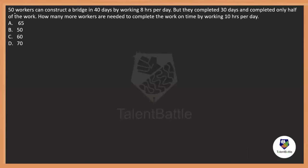50 workers can construct a bridge in 40 days working 8 hours per day, but after 30 days they completed only half of the work. How many more workers are needed to complete the work on time, working 10 hours a day? Whenever you get a question like this where workers did only part of the work and you need to add more people, you can apply a formula.